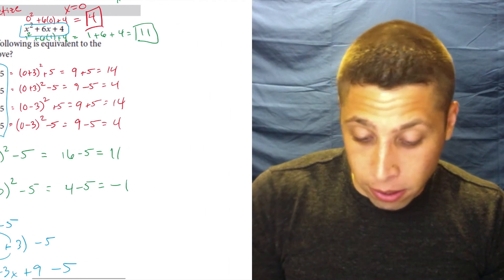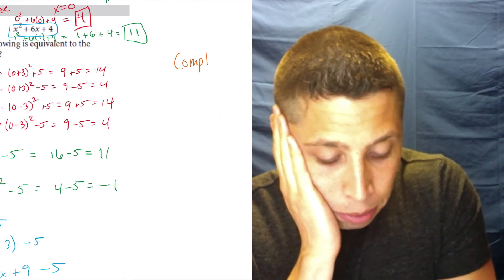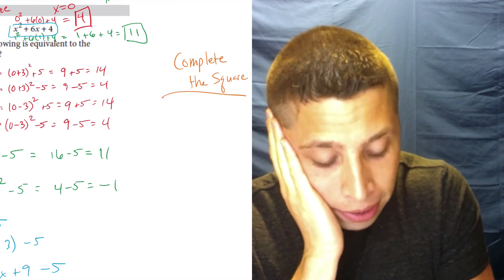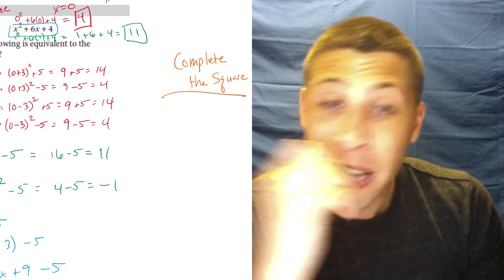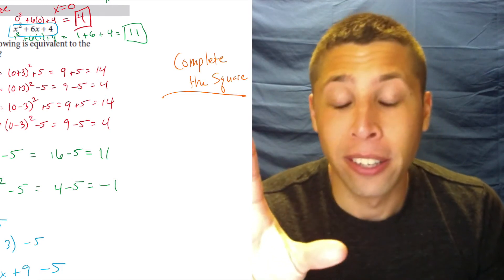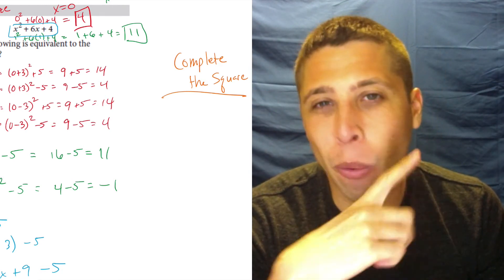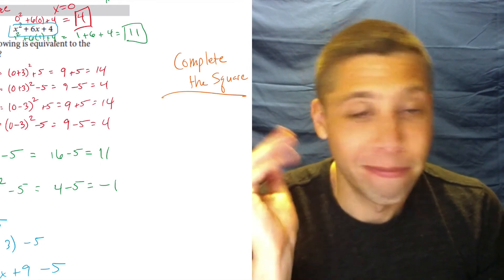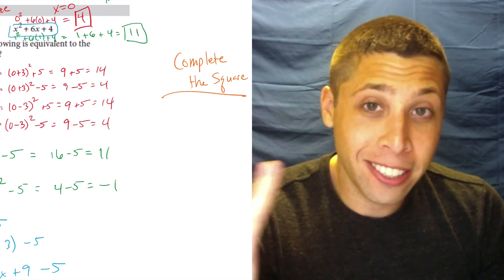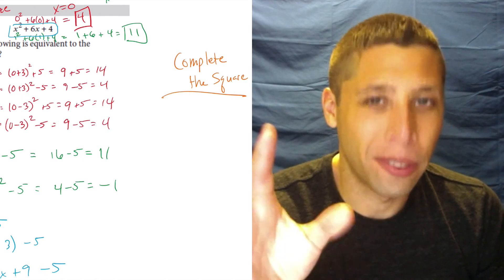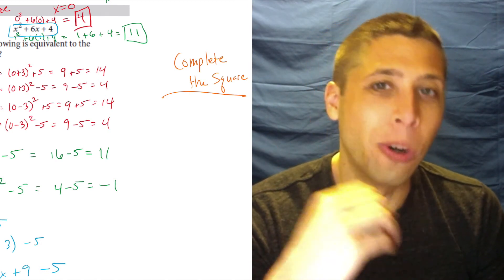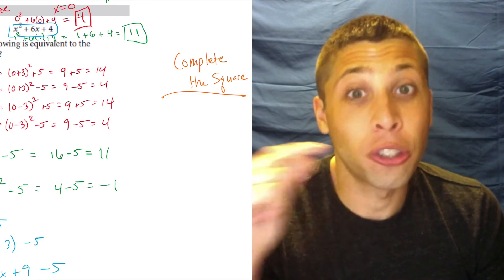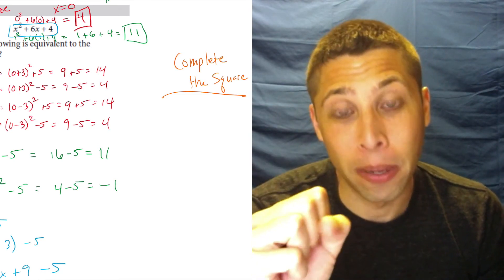The way the SAT would probably have you do this is using something called complete the square, which I bet a bunch of you right now are going like, oh, yeah, I remember that. But you have no idea how to do it. Yeah. Completing the square is kind of like an algebra dead end. We all kind of learn it. We use it for like one or two things. And because it like never comes up, we forget it. And then we're screwed when it does eventually come up again. But honestly, on the SAT, you can get away with not knowing complete the square for 99% of the questions.